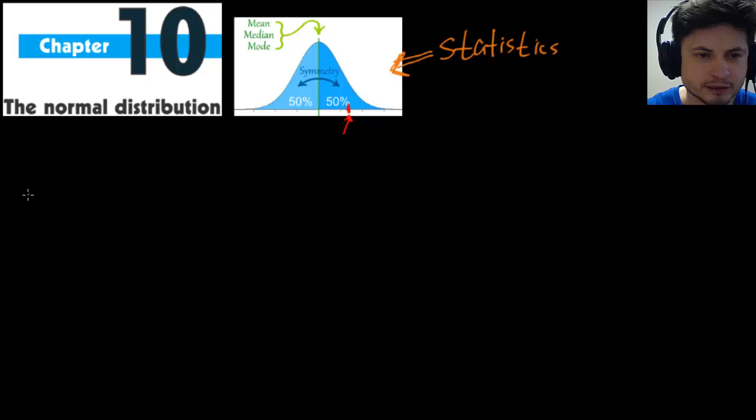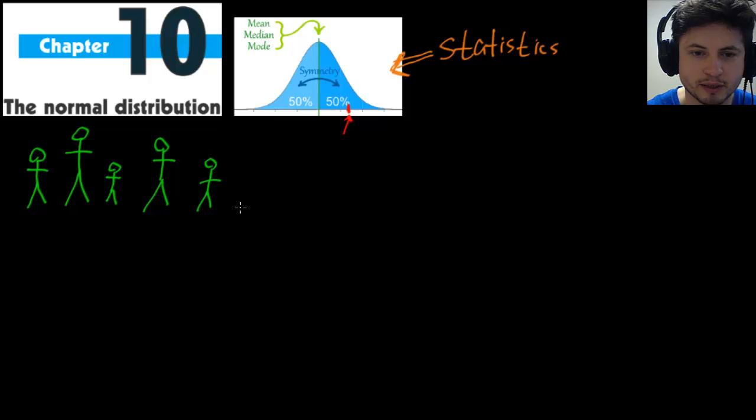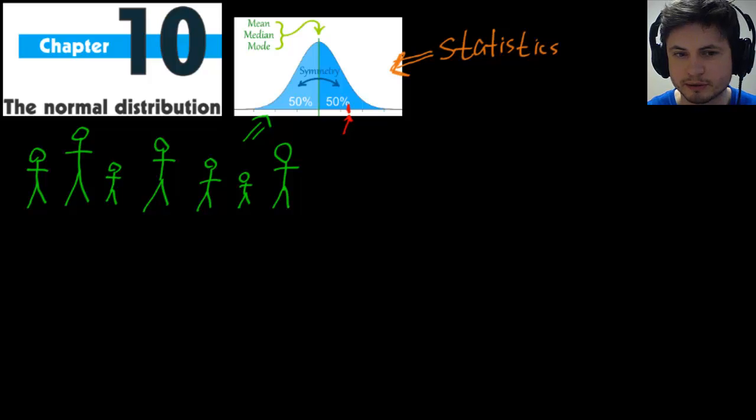The thing is, whenever you measure anything in real life, for example, let's just measure height. We're going to be measuring height of the stick people. And whenever you measure anything, it will always, always, always give you a normal distribution curve, or something that looks very similar to this. It can be a little bit different in terms of actual shape, but it will always be this kind of distribution where you have all kinds of different values. And if you combine all of these values, they will give you something like this.